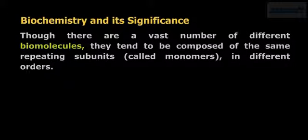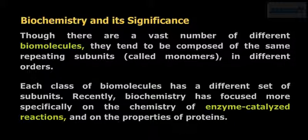Though there is a vast number of different biomolecules, they tend to be composed of the same repeating subunits called monomers in different orders. Each class of biomolecules has a different set of subunits.